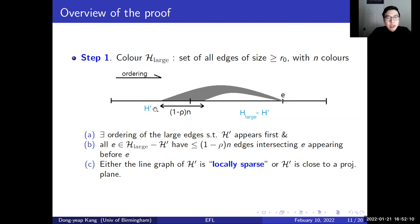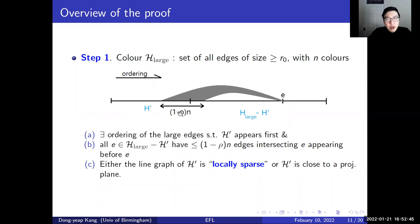So if we can prove that the chromatic index of H' is at most n, then by greedy coloring, sweeping from left to right in this ordering, we can show that all edges can be colored with n colors properly. We analyze the structure of H' so that either the line graph of H' has a locally sparse structure, or H' is close to a projective plane, so that H' can be colored with n colors.